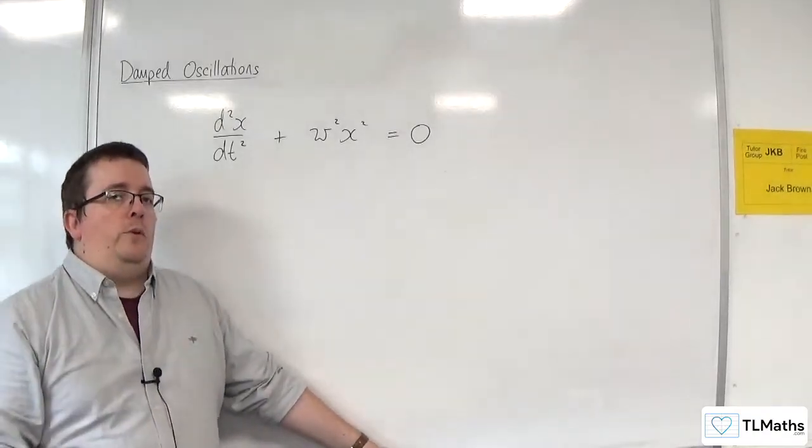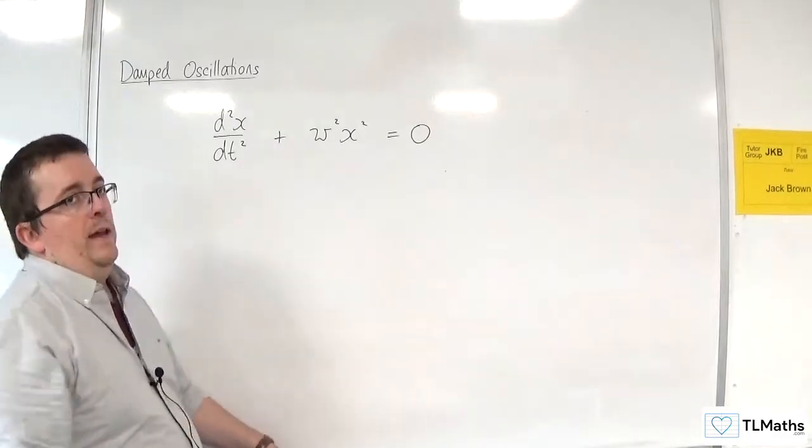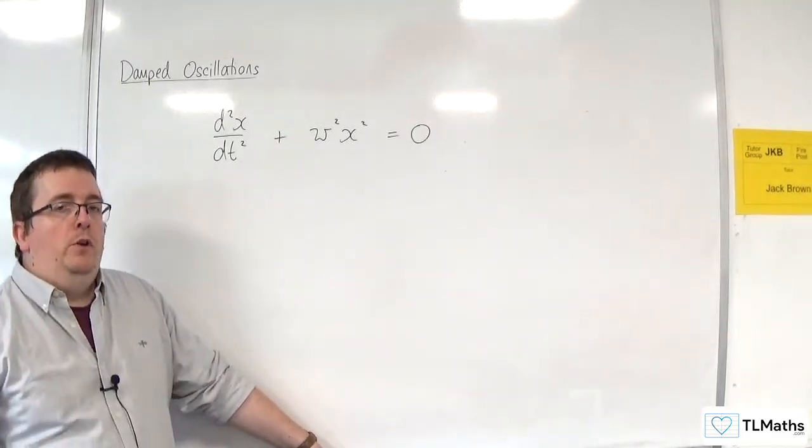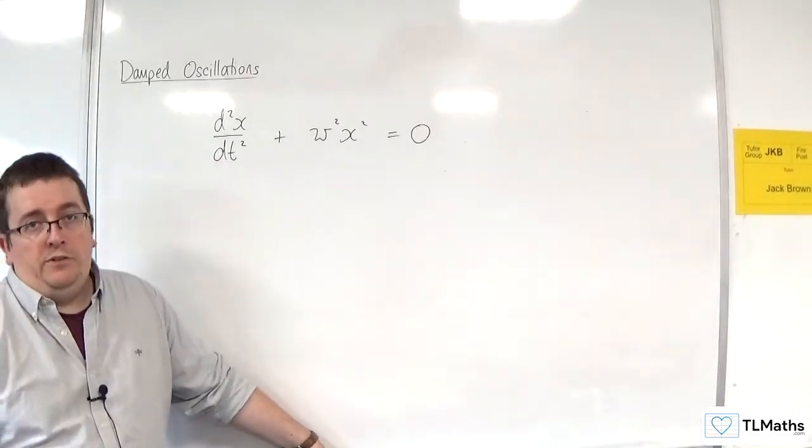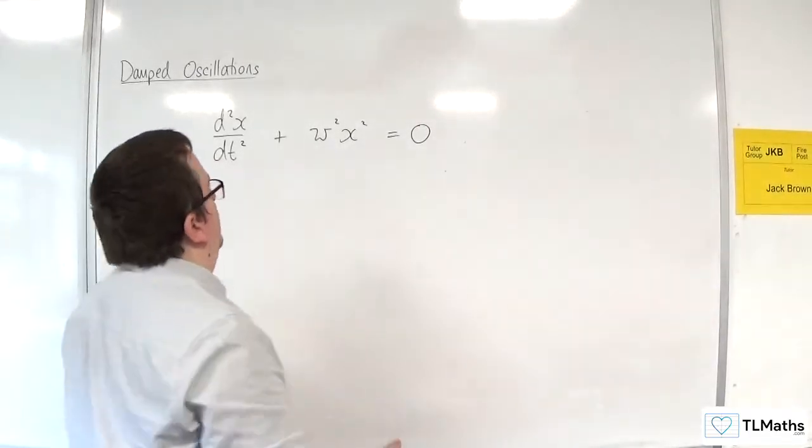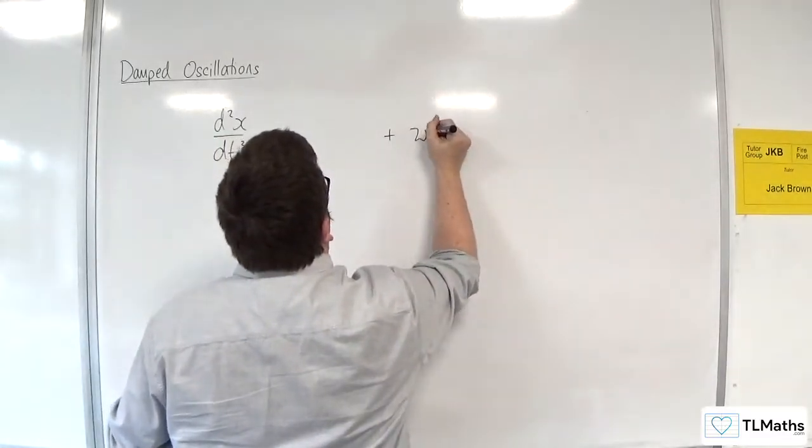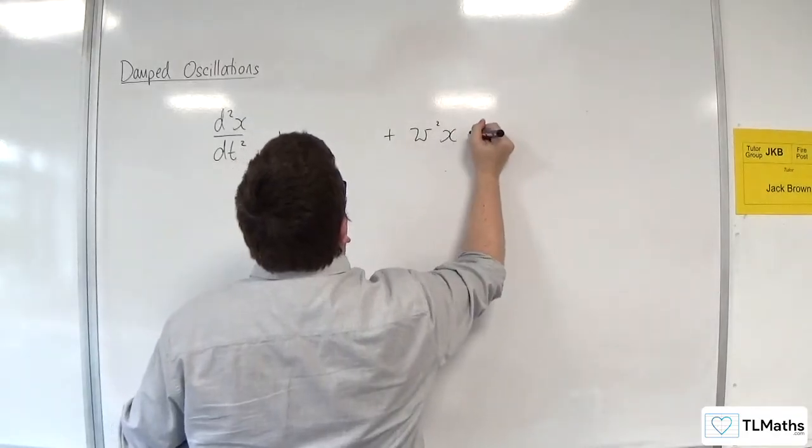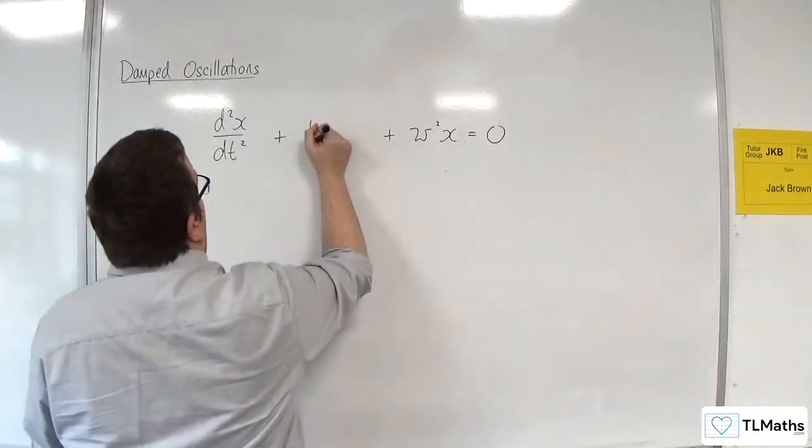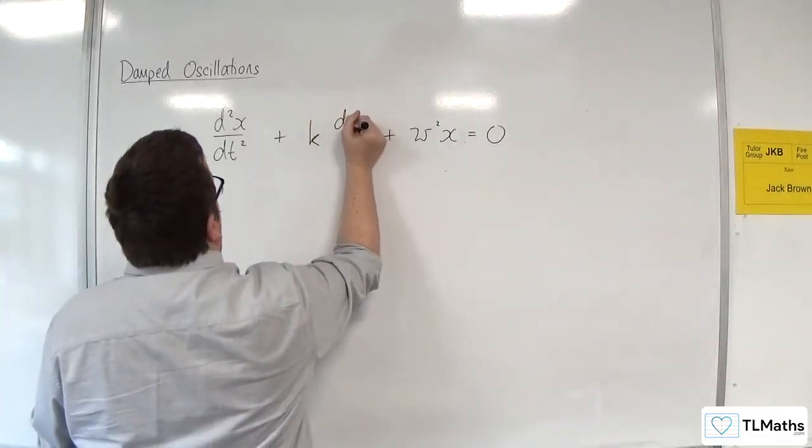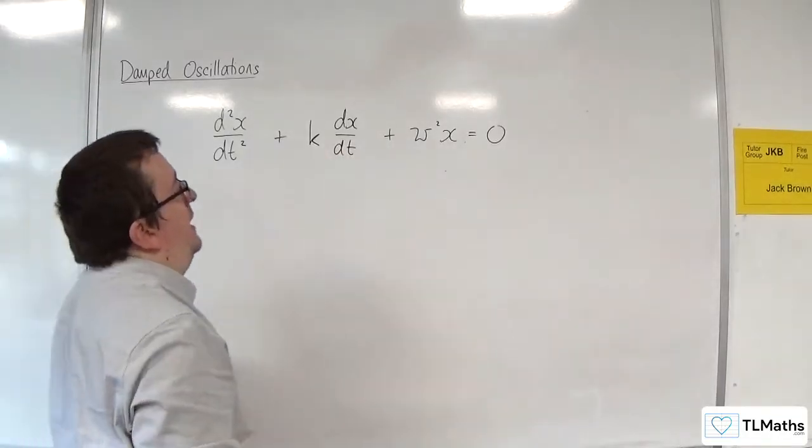And of course, we can add the ω²x to both sides and rewrite it like this. Now what we're going to do is introduce another term into the middle here, which is proportional to the velocity of the particle. So we're going to have still that ω²x is equal to 0, but we're going to have this term k dx/dt, the term that is proportional to the velocity in the middle.